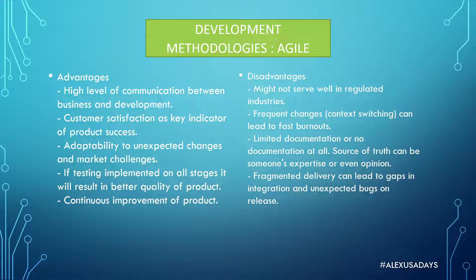Another advantage of Agile is customer satisfaction as a key indicator of product success. Because there's a lot of feedback and a loop between stakeholders or customers and development teams, there's always an understanding of whether a release was good, whether a feature was successful, and what the feedback is. One of the reasons Amazon got as big as it is today is that the core idea of their business is around customer satisfaction — that's why we have Prime, next-day delivery, and how easy it is to return items.